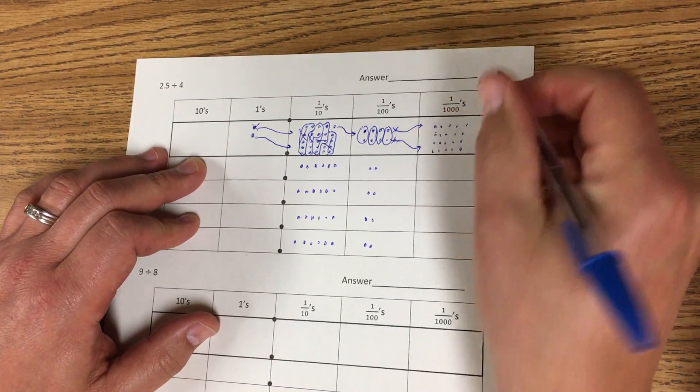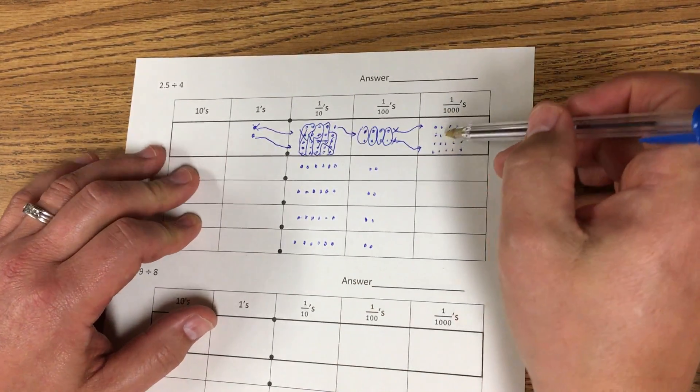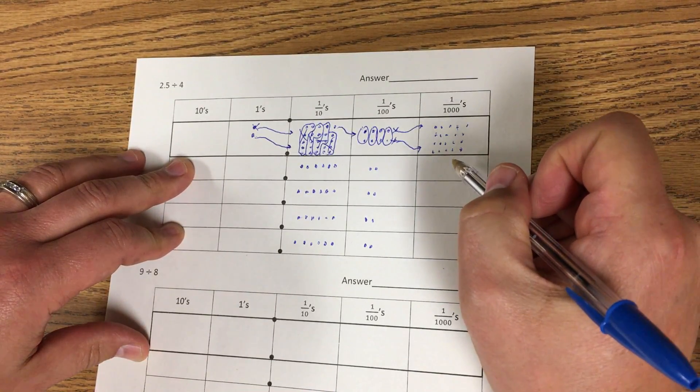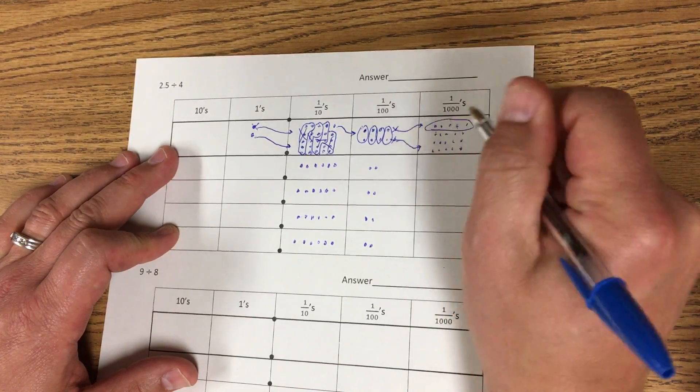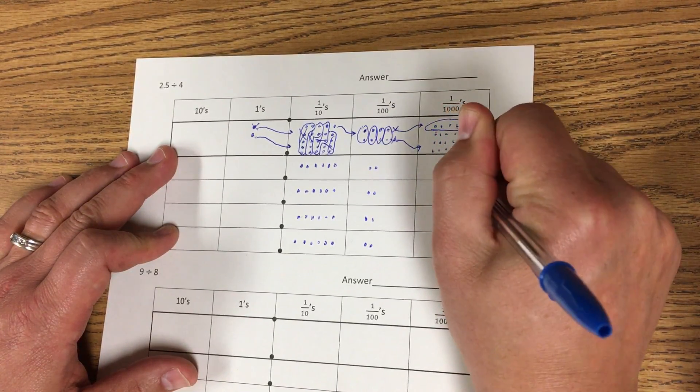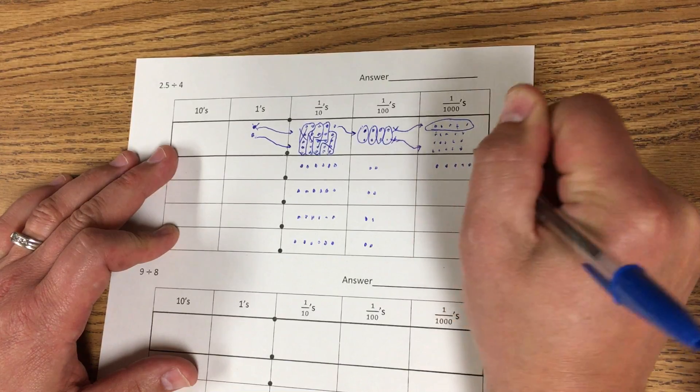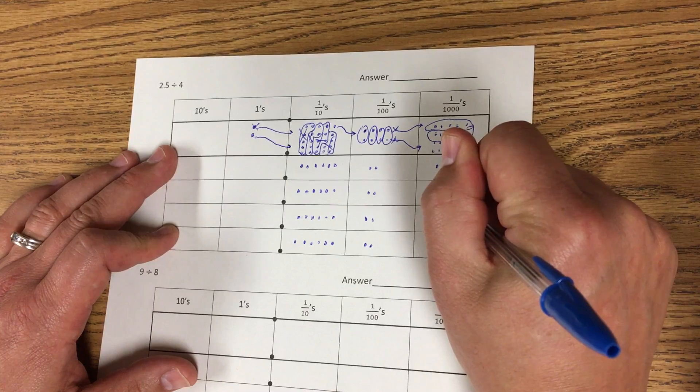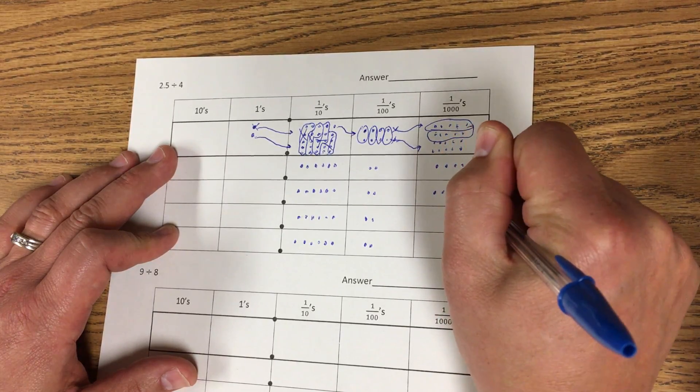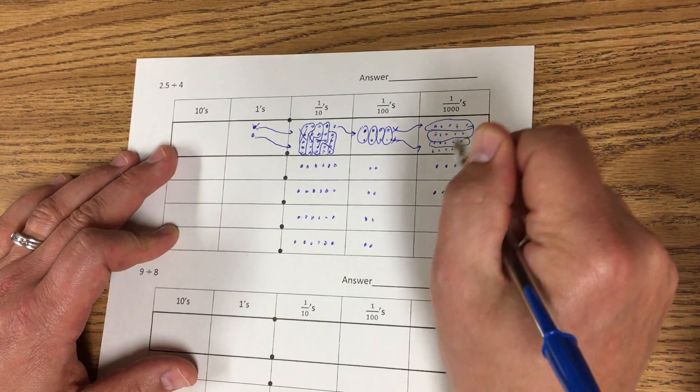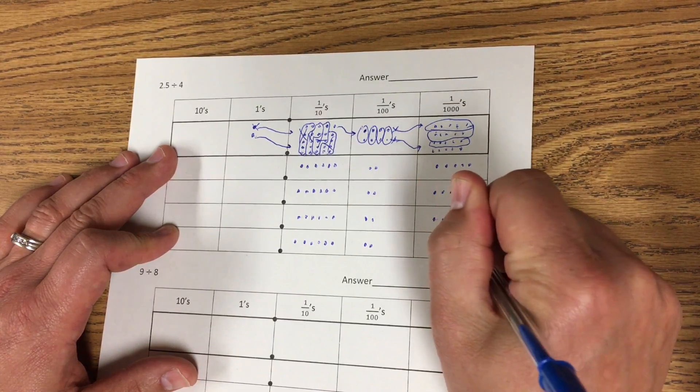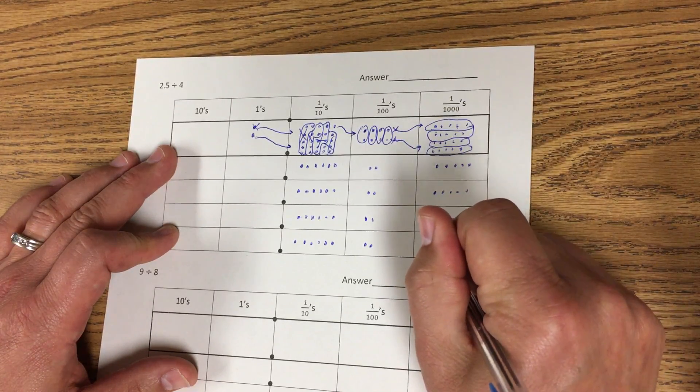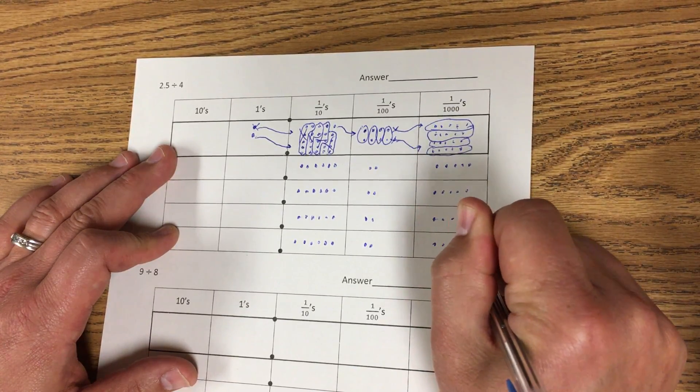So now I have a total of 20 thousandths, which I can split evenly into 4 categories. So that'll be 5 each. So I'm gonna take 5 and put it here, 5 more and put it here, 5 more and put them here, and the last 5 and put them here.